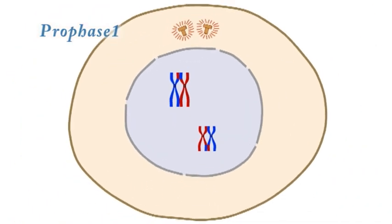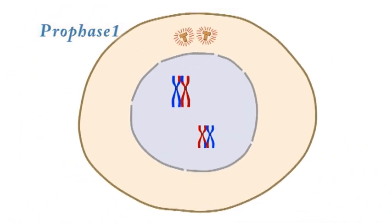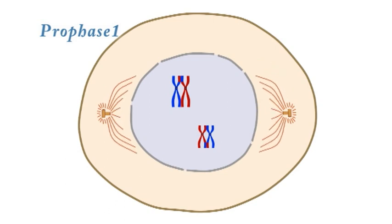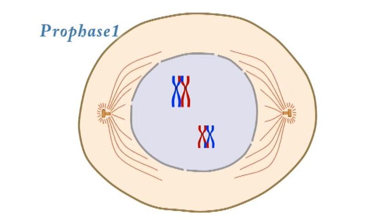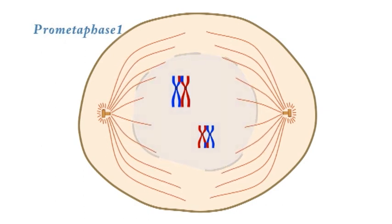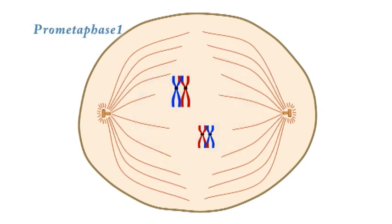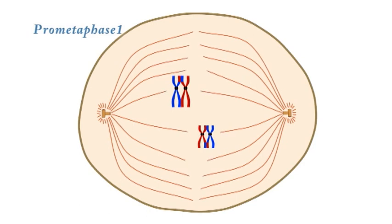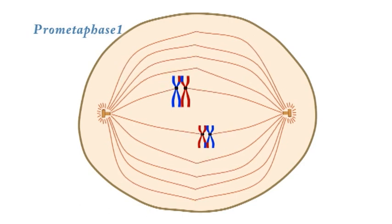At the same time during prophase 1, two centrosomes migrate towards opposite poles of the cell and microtubules emanating from them start to form a spindle. As the nuclear envelope disintegrates, microtubules invade the nucleus and attach to kinetochores on the chromosomes.